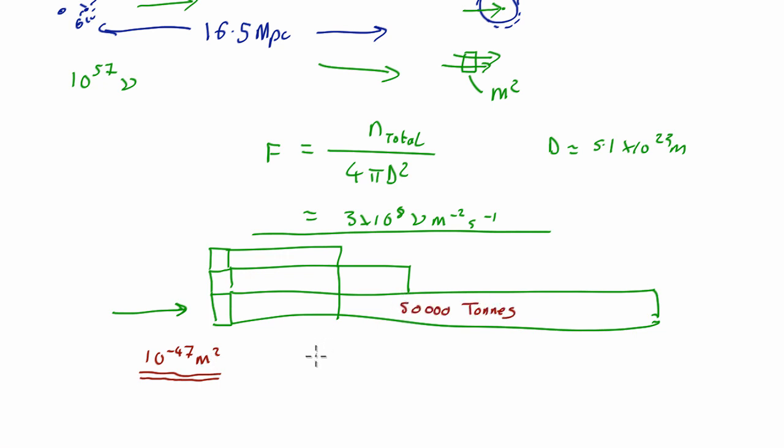So how many water molecules do we get in 50,000 tonnes of water? Well, one water molecule weighs about 16 for the oxygen plus one for each hydrogen times the atomic mass unit, 1.67 × 10⁻²⁷ kilograms.